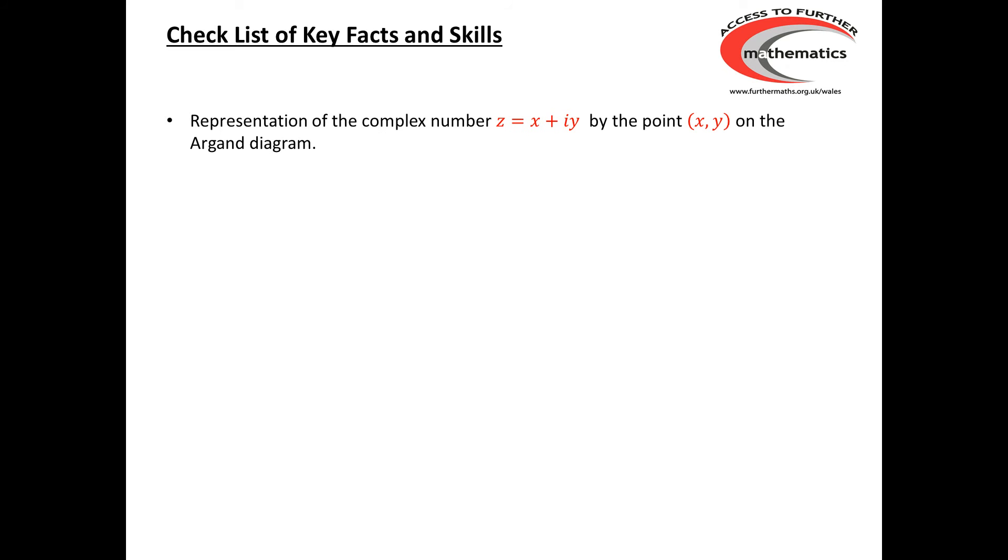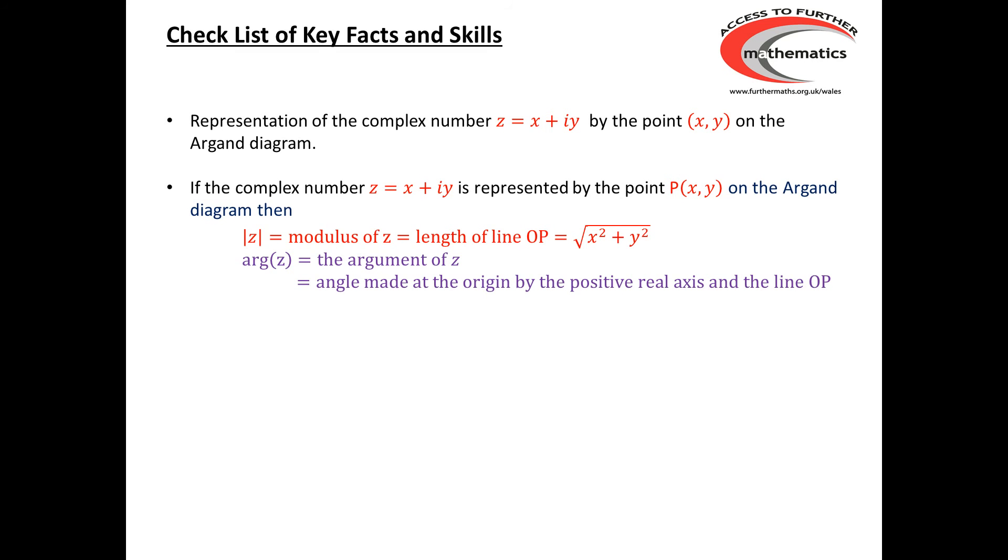A complex number x plus iy can be represented by the point (x,y) on the Argand diagram, and that then leads us to the notion of the modulus and the argument of a complex number.